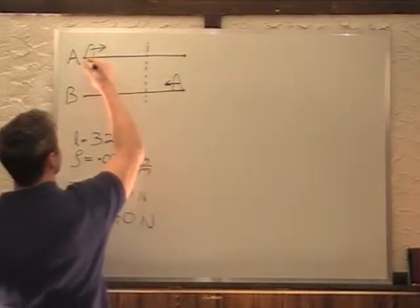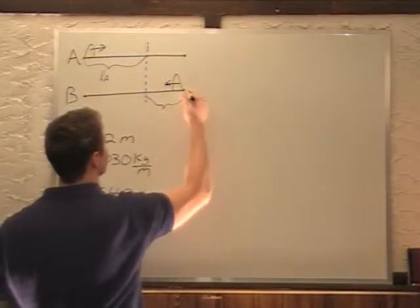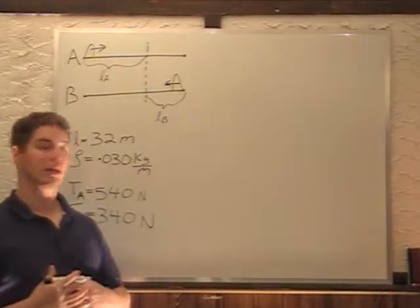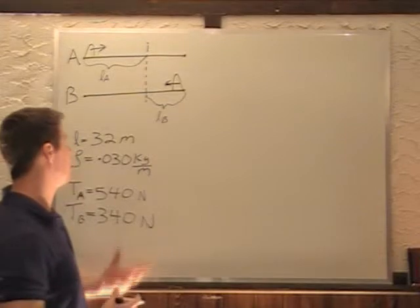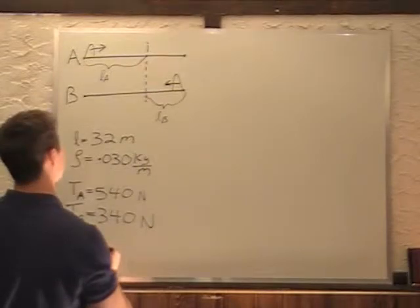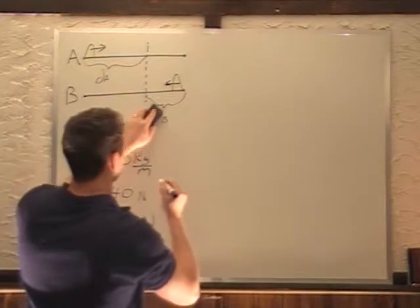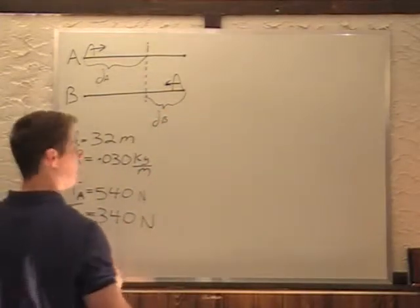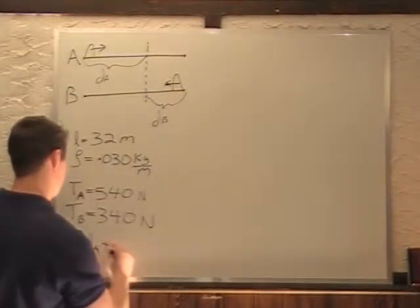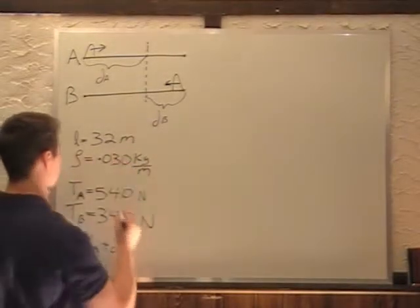We can see that this here is length A. This here is length B. That's the distance they travel before they cross which is what we're looking for. So I'll actually call it distance A and distance B, because I like to use the formula distance equals velocity times time. So we can say distance traveled by A plus distance traveled by B equals the total distance of 32 meters.